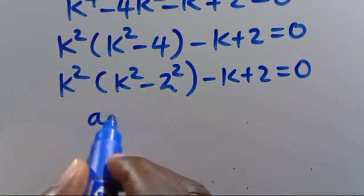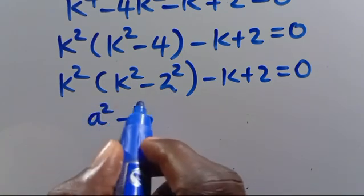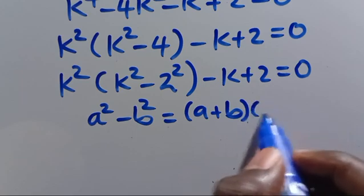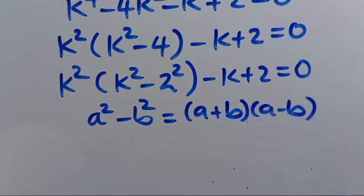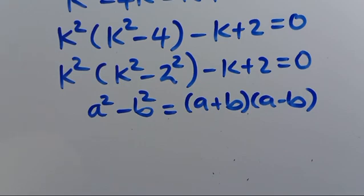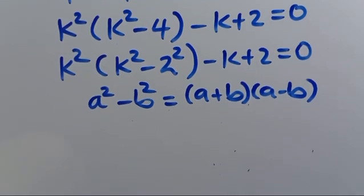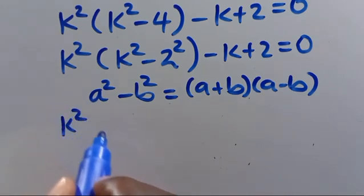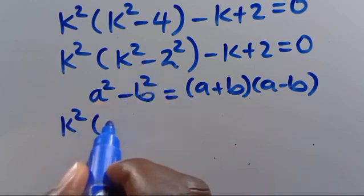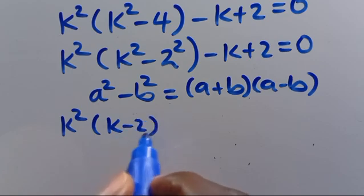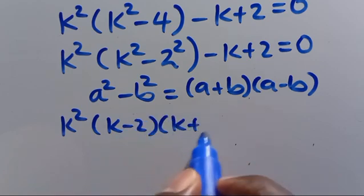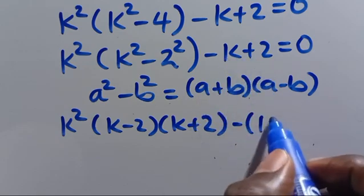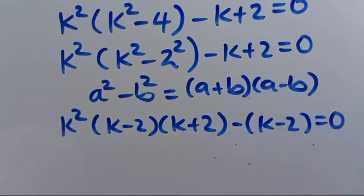Recall the difference of two squares: a² - b² = (a + b)(a - b). So k² - 4 = (k - 2)(k + 2). Substituting back, we have k²(k - 2)(k + 2) minus (k - 2) = 0.